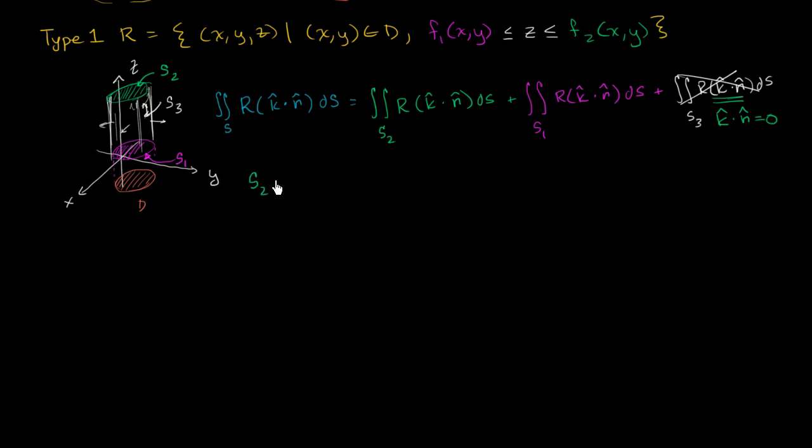So let's say surface 2 can be represented by the vector position function. I'll just call it t, t for 2. So t, which is a vector. It's going to be a function of x and y. Those are going to be our parameters.